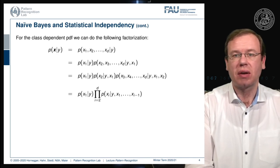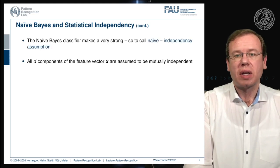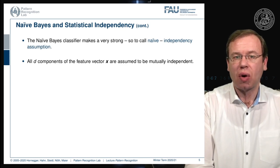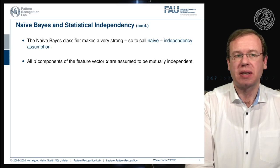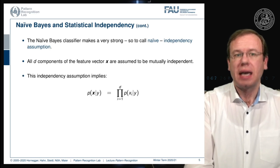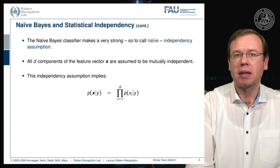You can see how we start building this up, with all the different interdependencies. This is essentially nothing else than constructing a full covariance matrix, for example in the Gaussian case. What does Naive Bayes do? It makes a very strong assumption — it naively assumes the independence of dimensions. All d components of the feature vector x are assumed to be mutually independent, which means we can rewrite the class-conditional probability as simply the product over the individual dimensions of x.